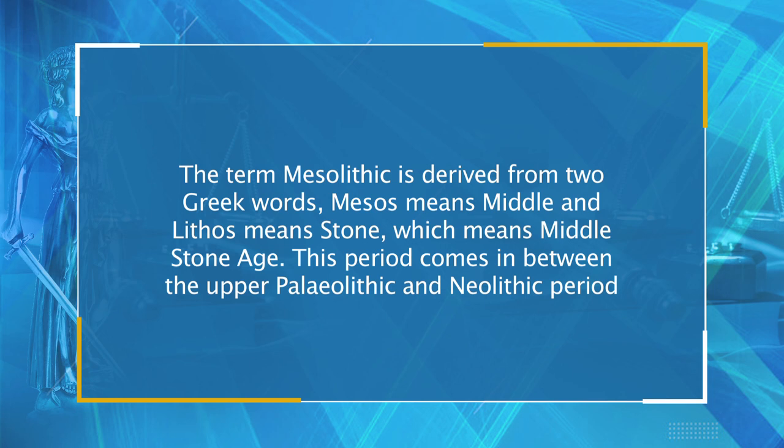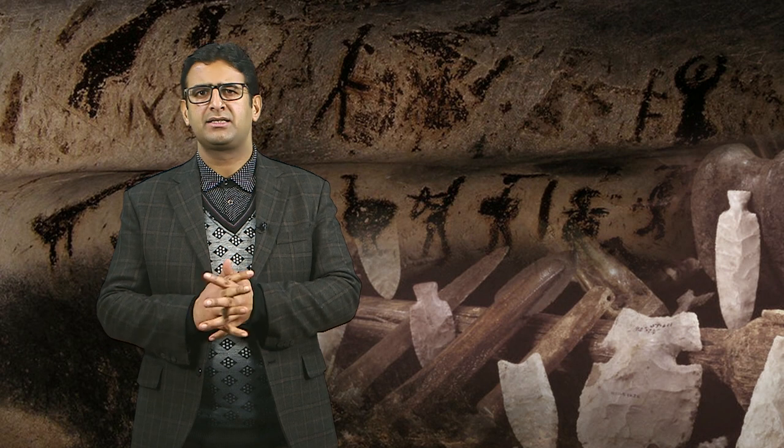First, we'll be discussing the terminology. The term Mesolithic is derived from two Greek words: 'mesos,' which means middle, and 'lithos,' which means stone. Therefore it means the Middle Stone Age. This period comes in between the Upper Paleolithic and the Neolithic period in the development of the stone ages. It is also referred to as the final phase of hunting and gathering stages between the last glacial maximum and the Neolithic revolution.